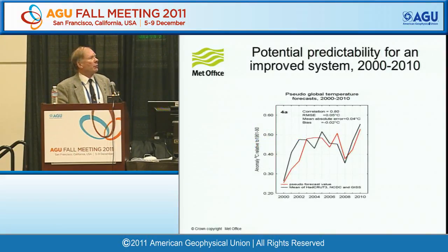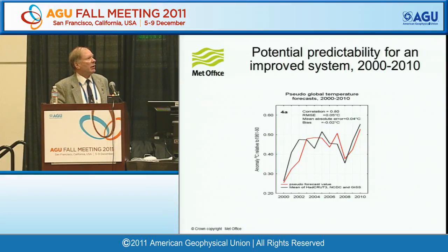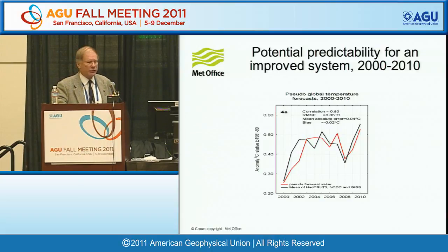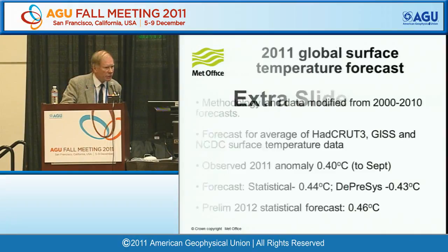If we replace those forecasts with some of the improvements we've made in those simulations, and also replace HADCREW T3 — which is somewhat biased — with the average of HADCREW T3, NCDC, and GIS, that's the black curve, you get even higher skill. So the forecasts are now being made for the average of these three data sets.